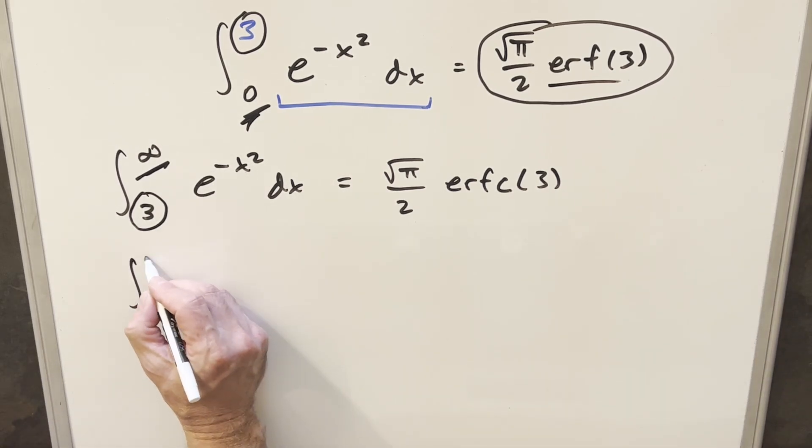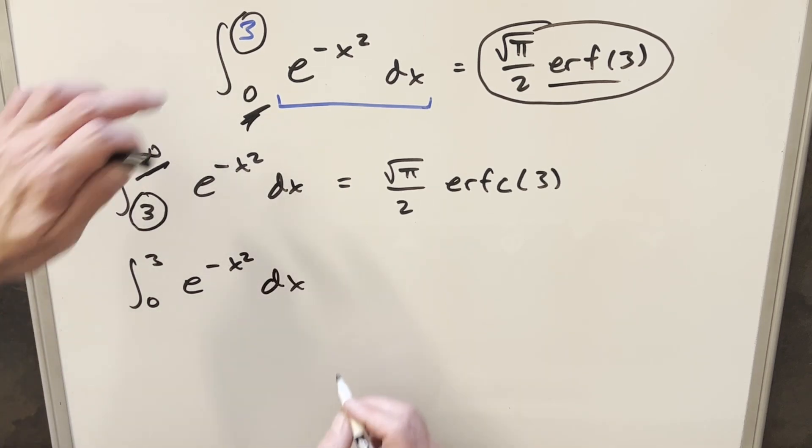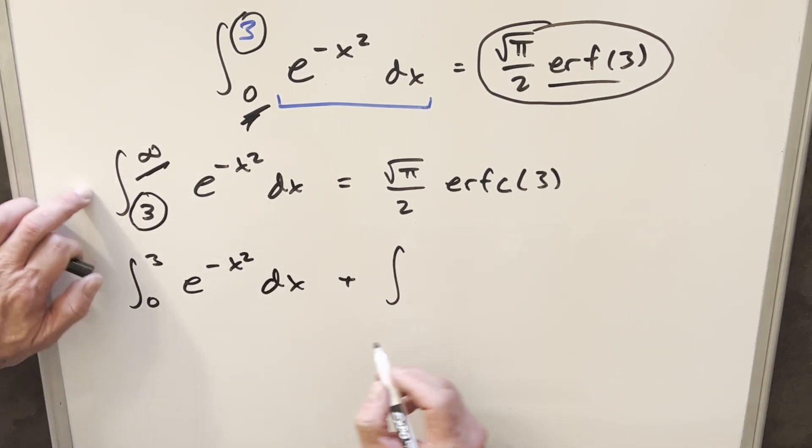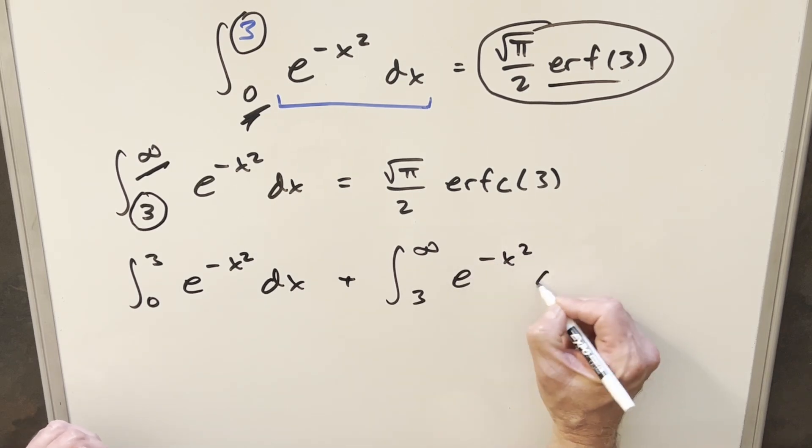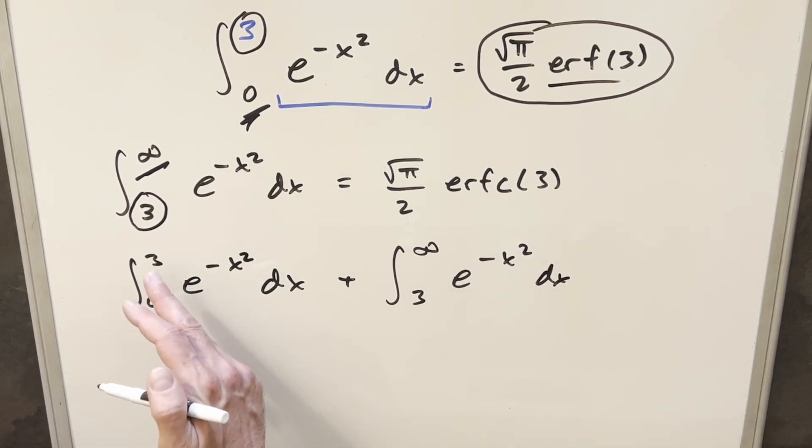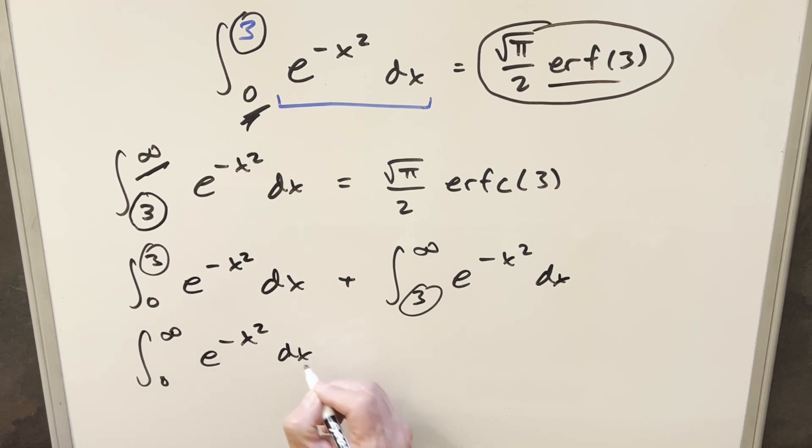So if we have the integral, if we have this integral from 0 to 3, the problem we started with, and we add it to this one going from 3 to infinity, e minus x squared, then doing it this way, there's no break in our bounds where we have 3 as our upper bound, 3 as our lower bound here. We can actually put these together and write this as the integral from 0 to infinity, e minus x squared dx,